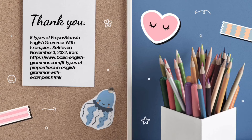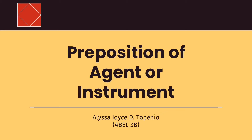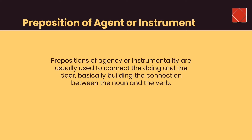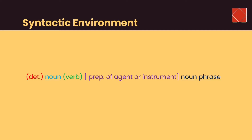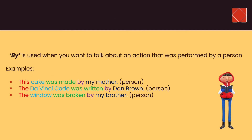Good day, I am Eliza Joyce Tupeno, and I am going to present the preposition of agent or instrument. Prepositions of agency or instrumentality are usually used to connect the doing and the doer, building the connection between the noun and the verb. This means that prepositions of agency or instrumentality are words placed in a sentence to fulfill the purpose of establishing an agent. There are two prepositions used: 'by' and 'with,' and they are both used in different manners. 'By' is used when you want to talk about an action performed by a person. For example: 'This cake was made by my mother.'